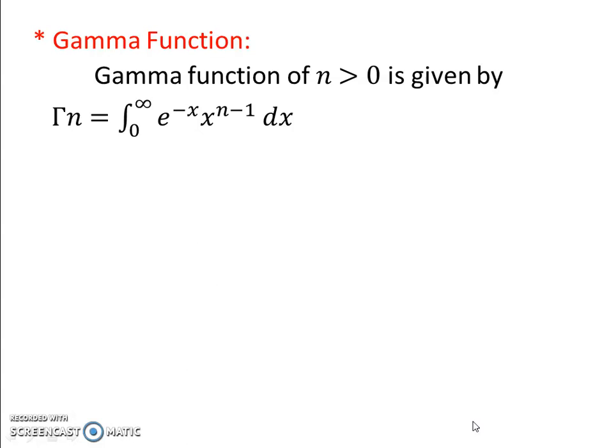For example, consider ∫₀^∞ e^(−x) · x³ dx. The term x³ can be written as x^(4−1), hence this integral is nothing but Γ(4).